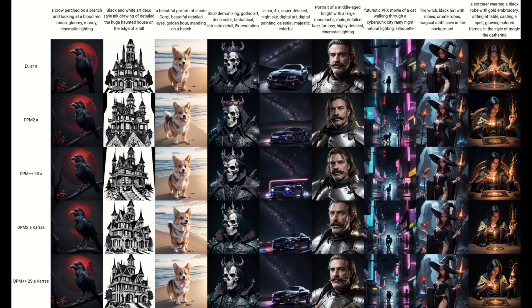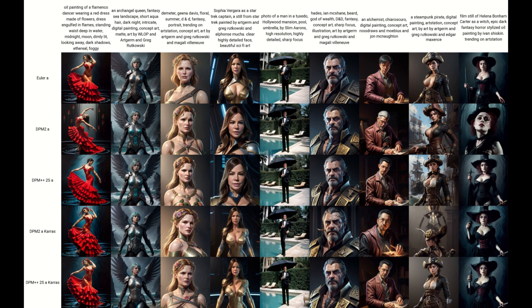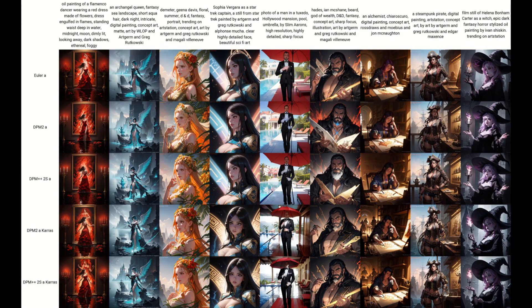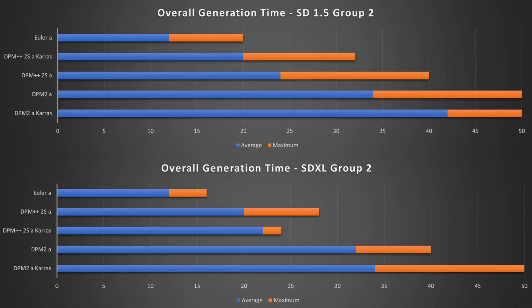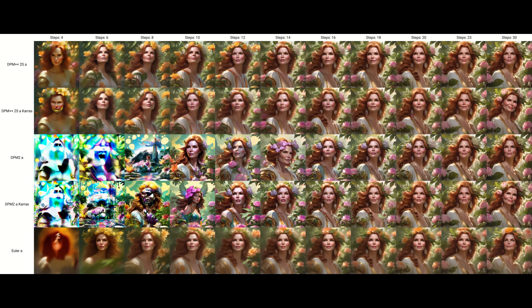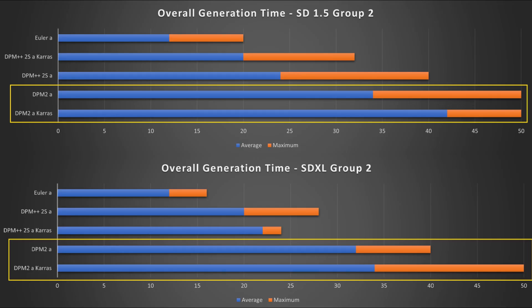Next, we have the five Group 2 samplers, which all have a lowercase 'a' in the name meaning ancestral — they add noise back in during generation. Once again, there are two subgroups, with Karras samplers sometimes resulting in different output. Euler A can match either set or just do its own thing. All of these samplers do not converge, meaning the image will keep changing as you add more steps. I would say Euler A is my top pick for SD 1.5 because it has faster processing speed with relatively low steps needed. However, for SDXL, Euler A images don't look as sharp, so I'd go with DPM++2SA or DPM++2SA Karras. DPM2A and DPM2A Karras are both slow and need more steps, so I would not recommend using them.